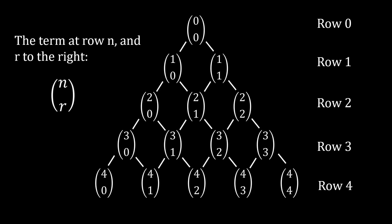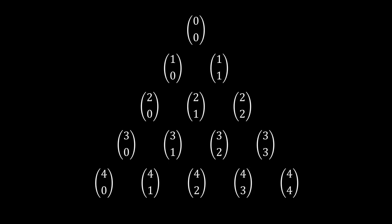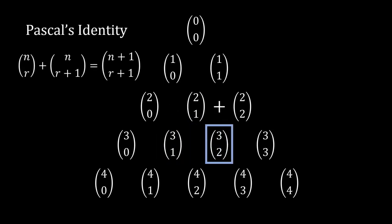One such pattern or identity is Pascal's identity. From the way we constructed Pascal's triangle, if we add two terms next to each other, it would be equal to the term below it. But now that we're looking at this from the perspective of combinations, we can form quite an interesting identity.